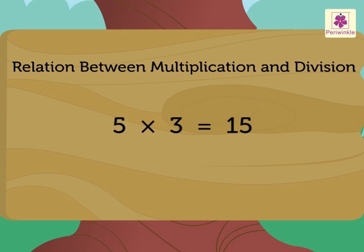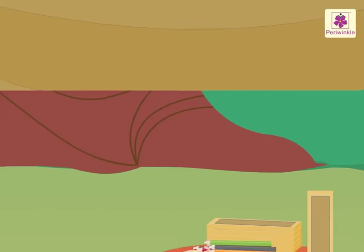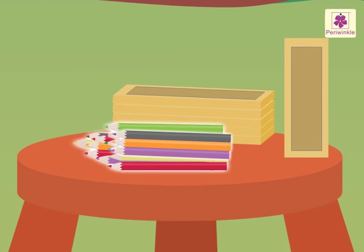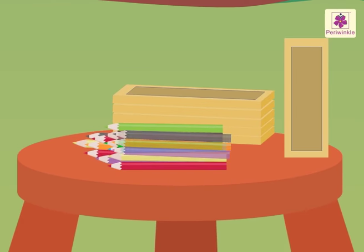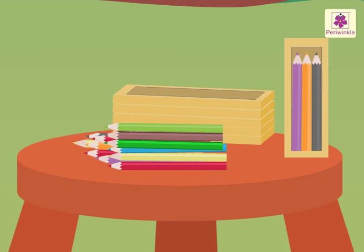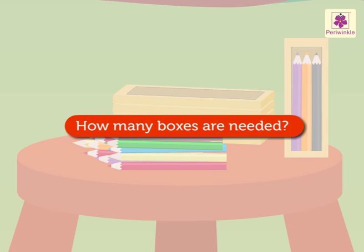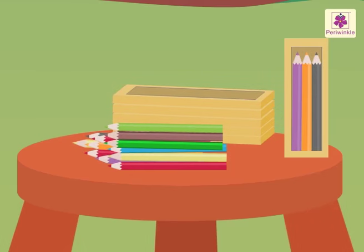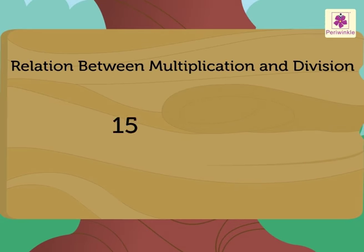Now, let us look at it in another way. There are 15 pencils. If each box can accommodate 3 pencils, then how many boxes are needed for 15 pencils? So, here we need to divide 15 by 3 to find the quotient. Therefore, 15 divided by 3 is equal to 5.